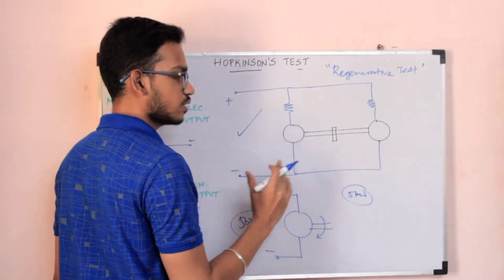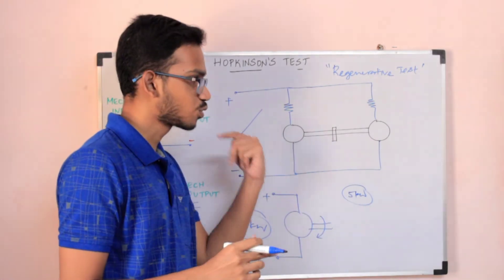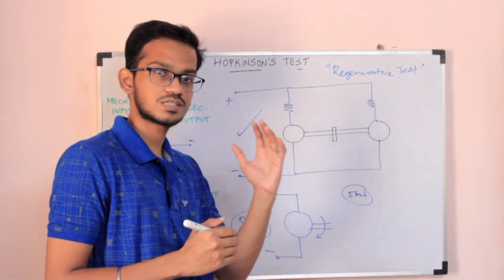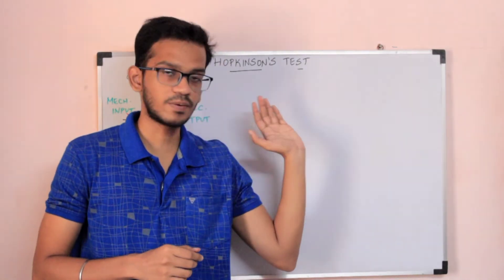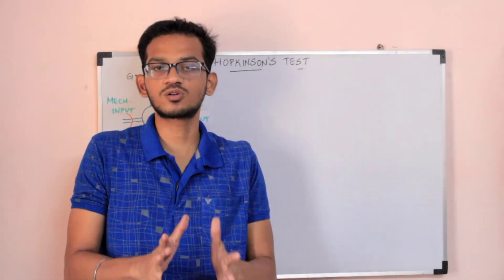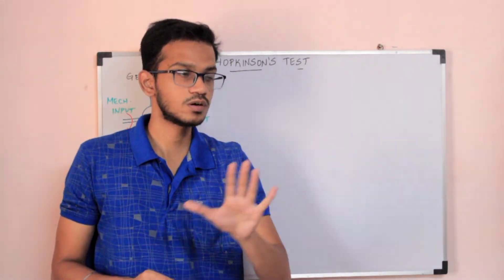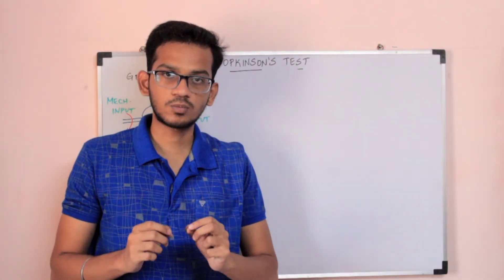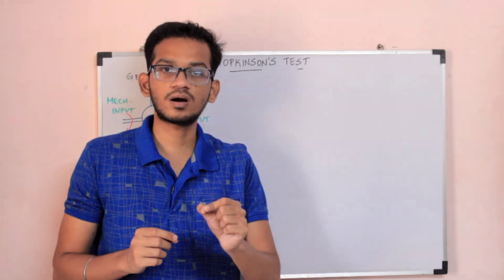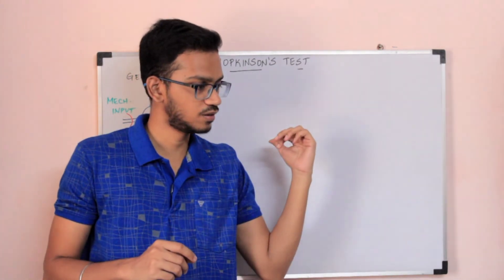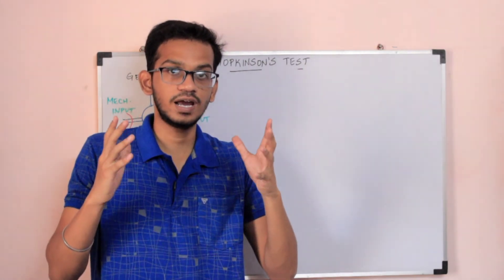This method is particularly useful for high-rated DC machines. You can use Hopkinson's Test on DC machines. In the next video, we will look at the overall concept in more detail — how to perform Hopkinson's Test, the experimental procedure, precautions, and the complete mathematical derivation. The main aim here was to explain the basic principle that John Hopkinson designed for this experiment.